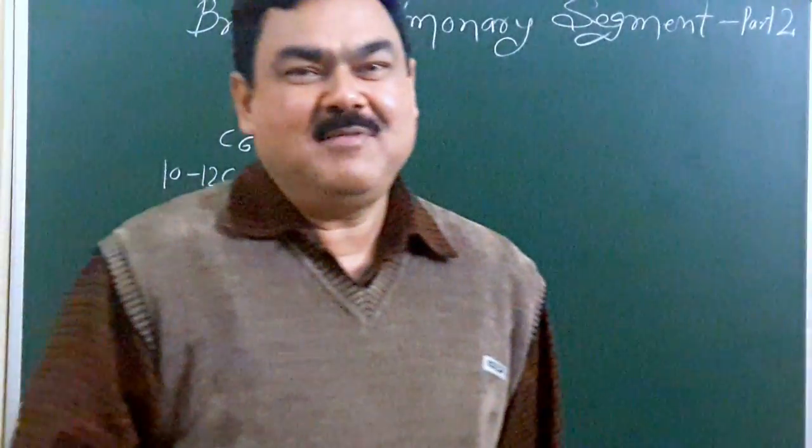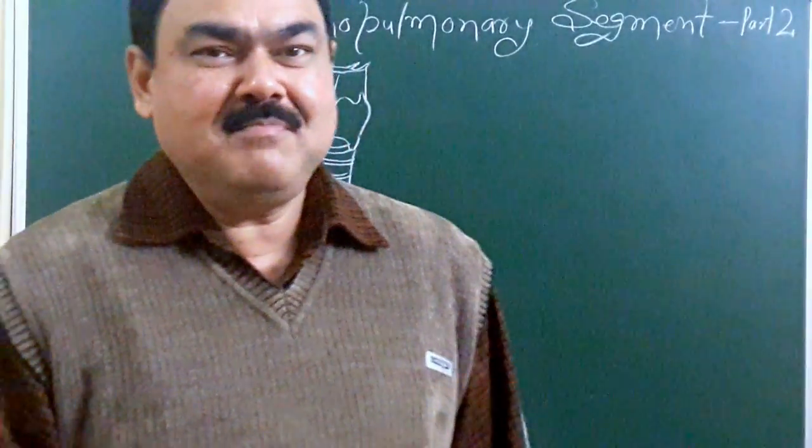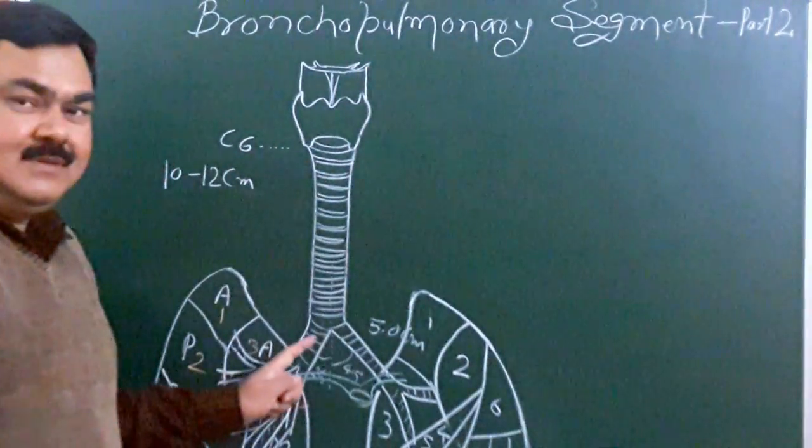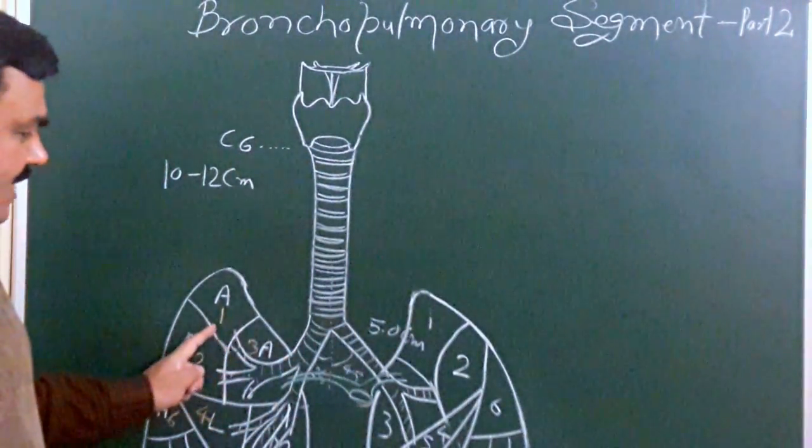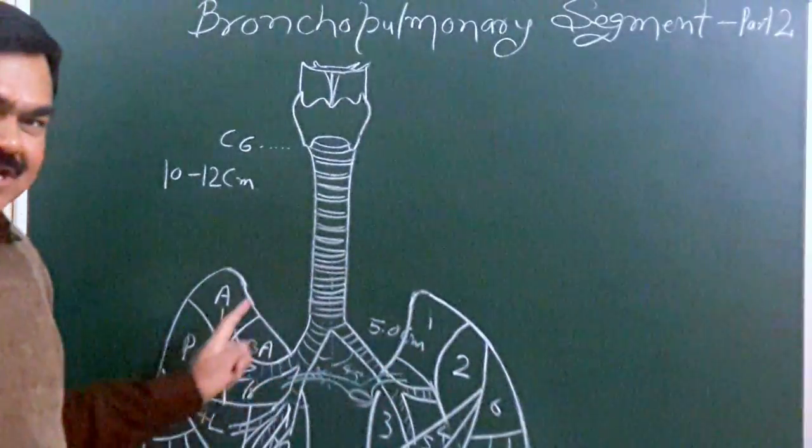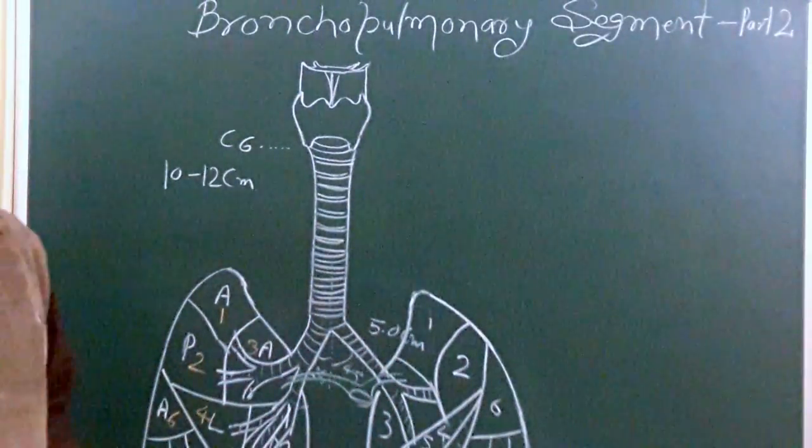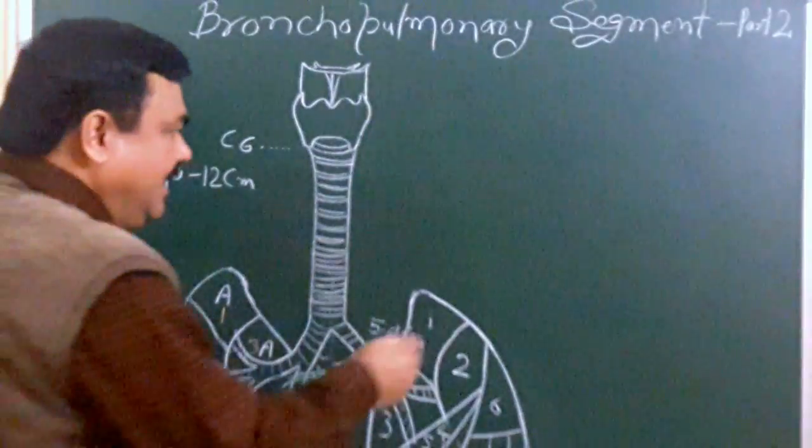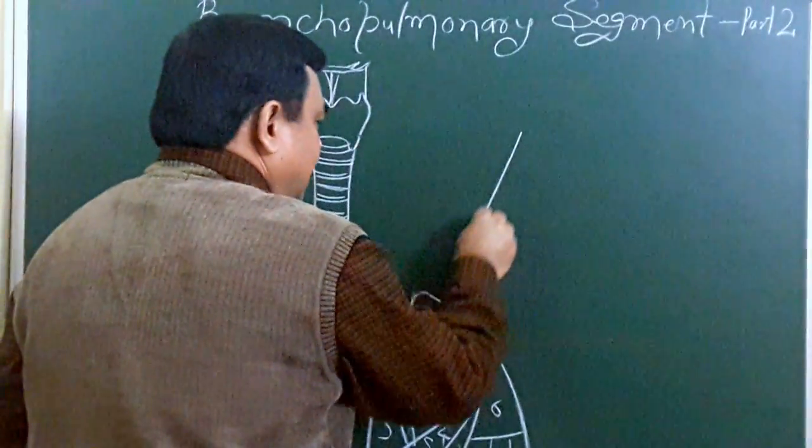Now we'll discuss the bronchopulmonary segment part 2. In part 1, you have seen this is the right lung, this is the left lung. Each lung has ten bronchopulmonary segments. Now we will make and explain one bronchopulmonary segment separately.